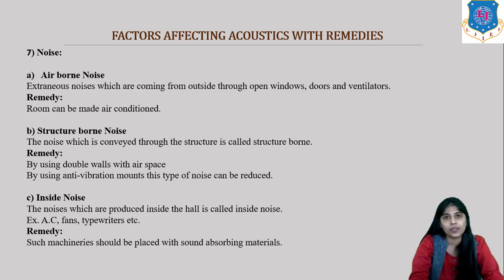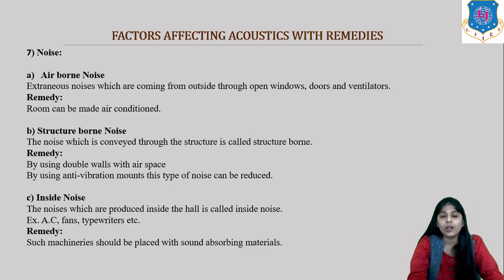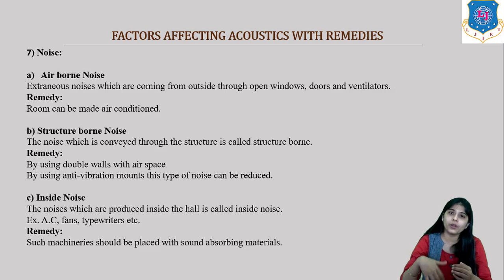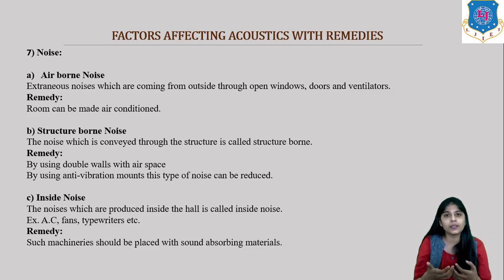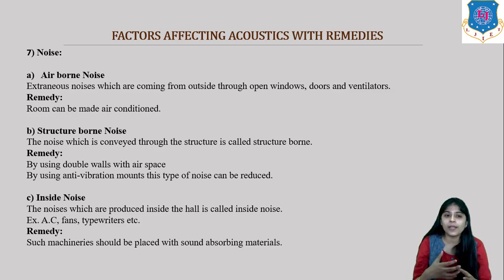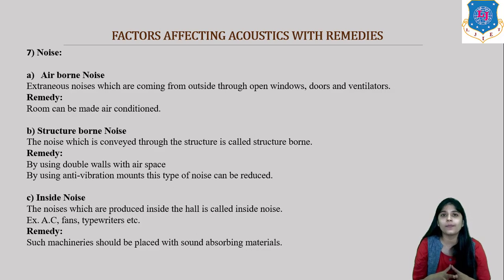The second type is structure-borne noise, which is conveyed through the structure of the building. For example, in a flat, noise from the floor above — such as someone hitting a door — can be heard below. This can be reduced by using double walls or double ceilings with air space, or by using anti-vibration mounts.